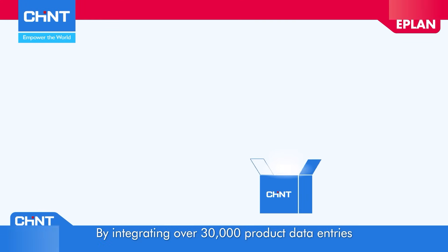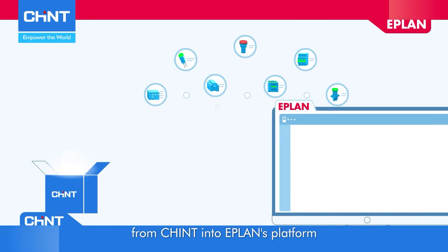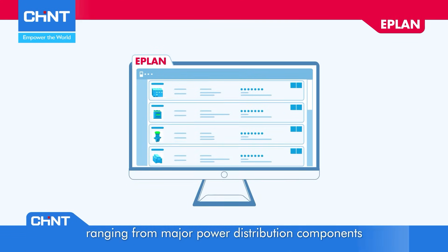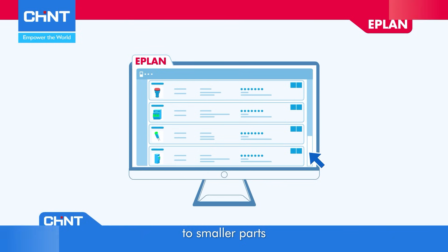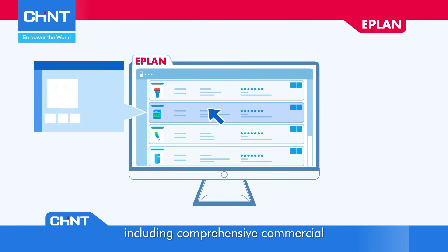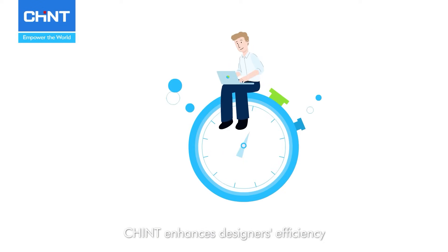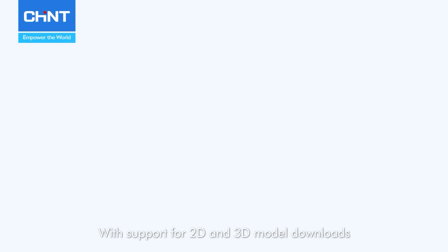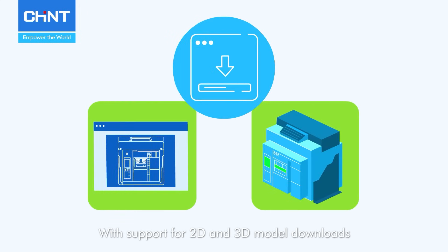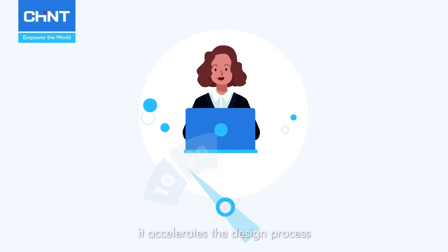By integrating over 30,000 product data entries from Jint into ePlan's platform — ranging from major power distribution components to smaller parts, including comprehensive commercial and technical information — Jint enhances designers' efficiency. With support for 2D and 3D model downloads, it accelerates the design process.